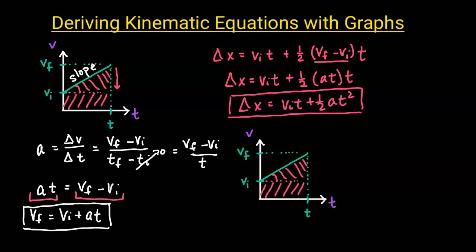For the next kinematic equation, we're going to look at this big rectangle and subtract this triangle. We're subtracting the small triangle from the big rectangle, which will again give us the area under the curve — just like before, except now we subtract the part that's not under the curve.